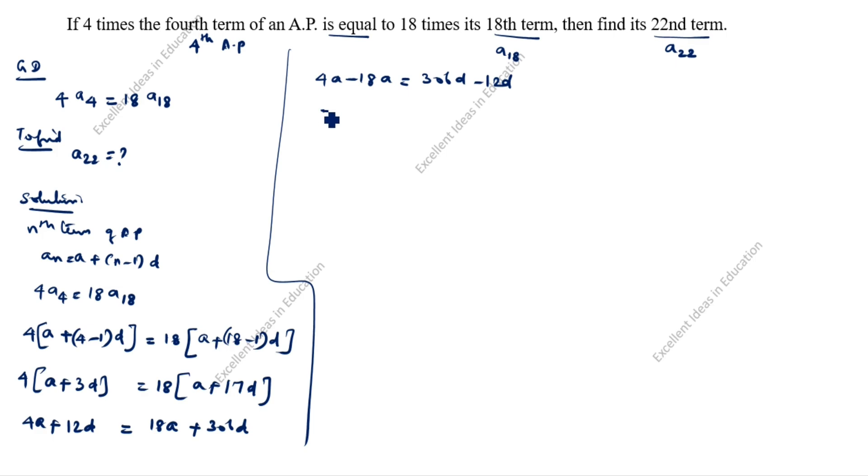Minus is the biggest number. You can write minus. 18 minus 4 is 14a equal to 306d minus 12d is equal to 294d.